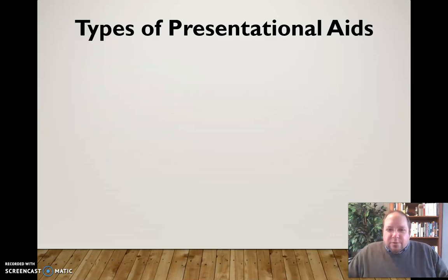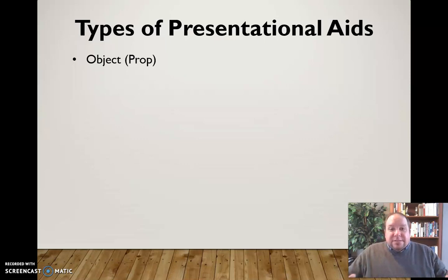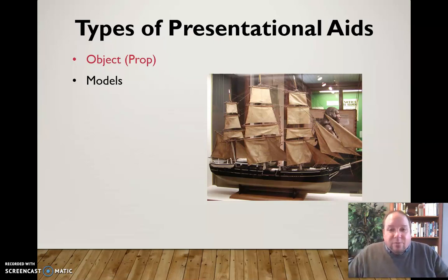So let's jump right into some types of presentational aids. First we have the idea of an object or a prop. We can bring that actual thing in if we have access to it and if it's appropriate to bring to the speaking occasion, and use that object as a prop during our speech. If we don't have access — because it's too big, too small, or too expensive — we can provide a model to represent these things.